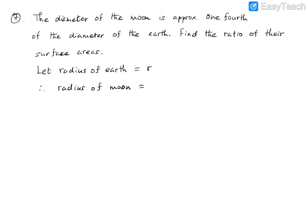So the radius of the moon is r over 4. We now have the two radii — the radius of the earth is r, and the radius of the moon is r by 4, both expressed in terms of the same parameter r.